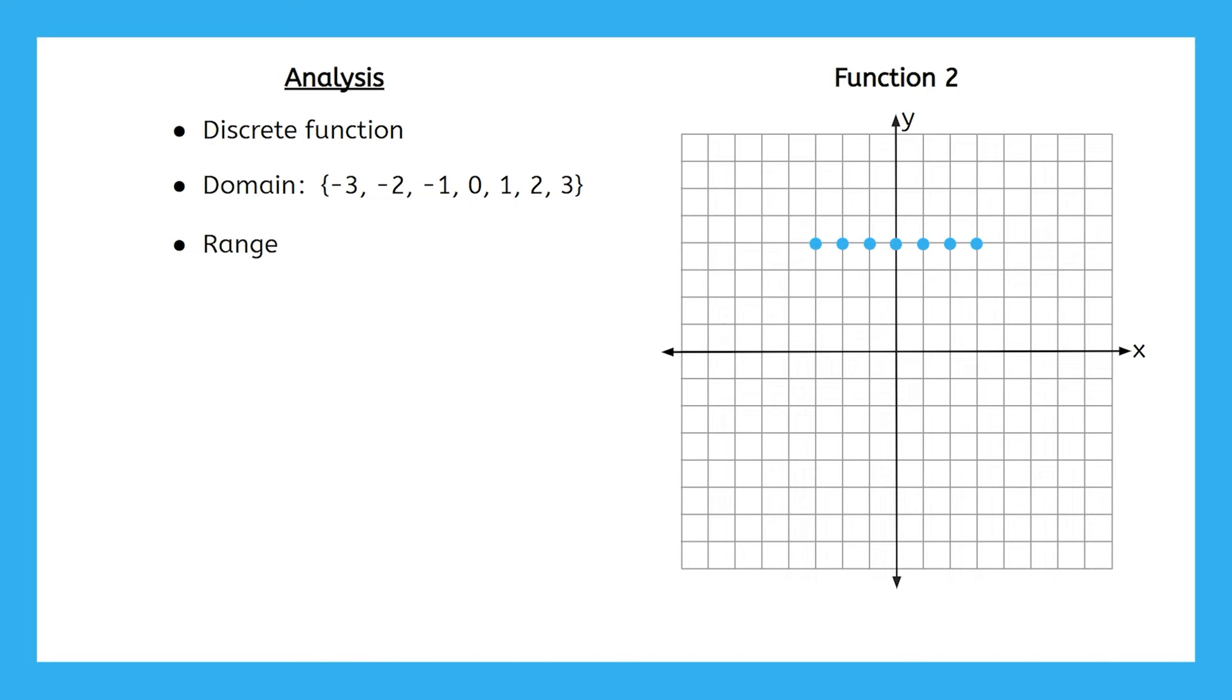Now, as for the range, we want to find all of the possible outputs for this function. So let's see if we input one, for example, we get four. If we input two, we also get four. If we input negative three, we still get four. Well, it looks like four is my only possible output for this function. Again, we can use curly brackets to represent the set of values for our range. In this case, it's just four.